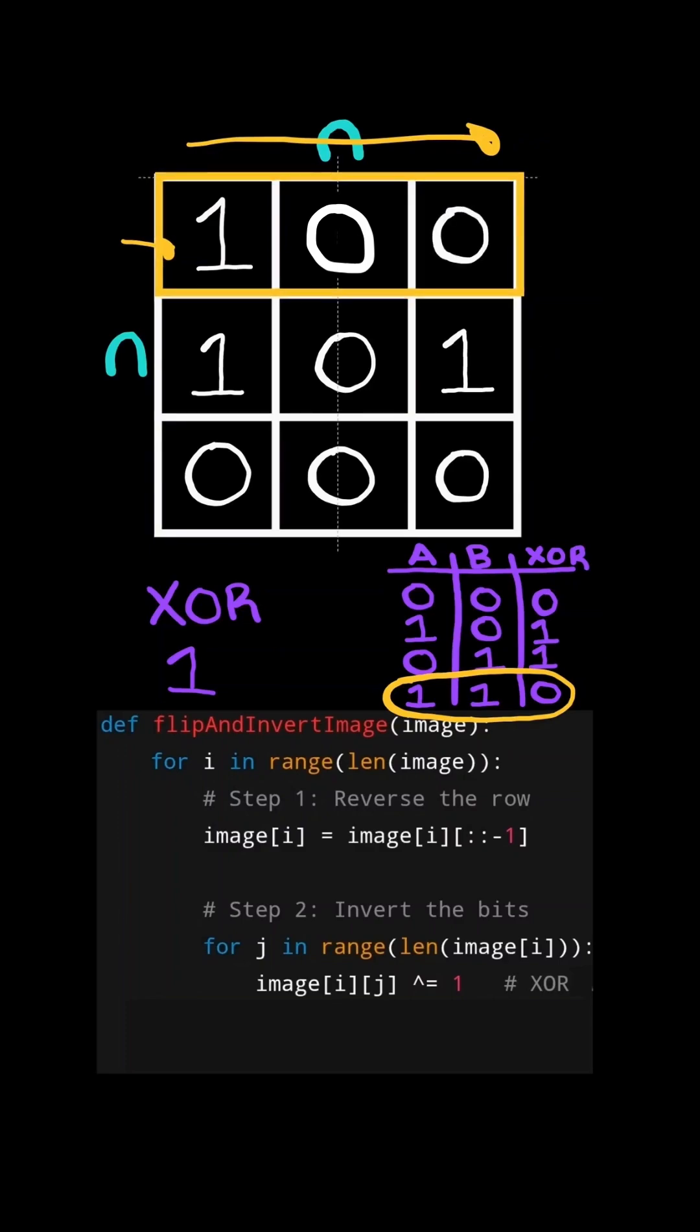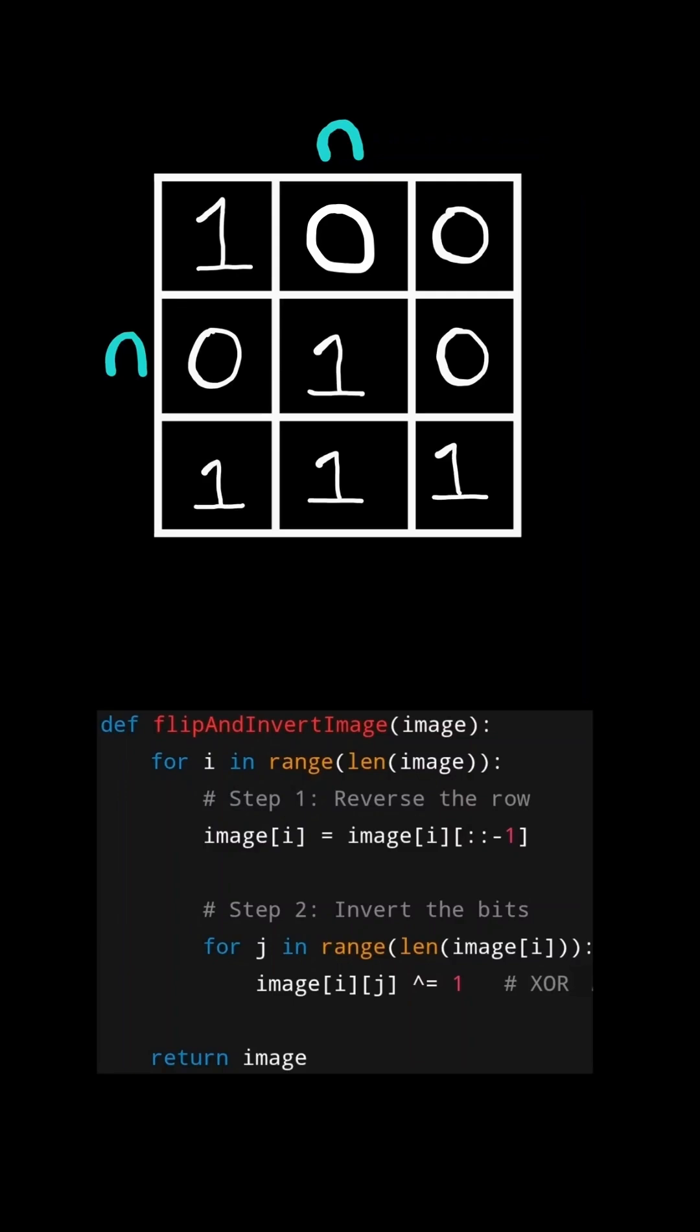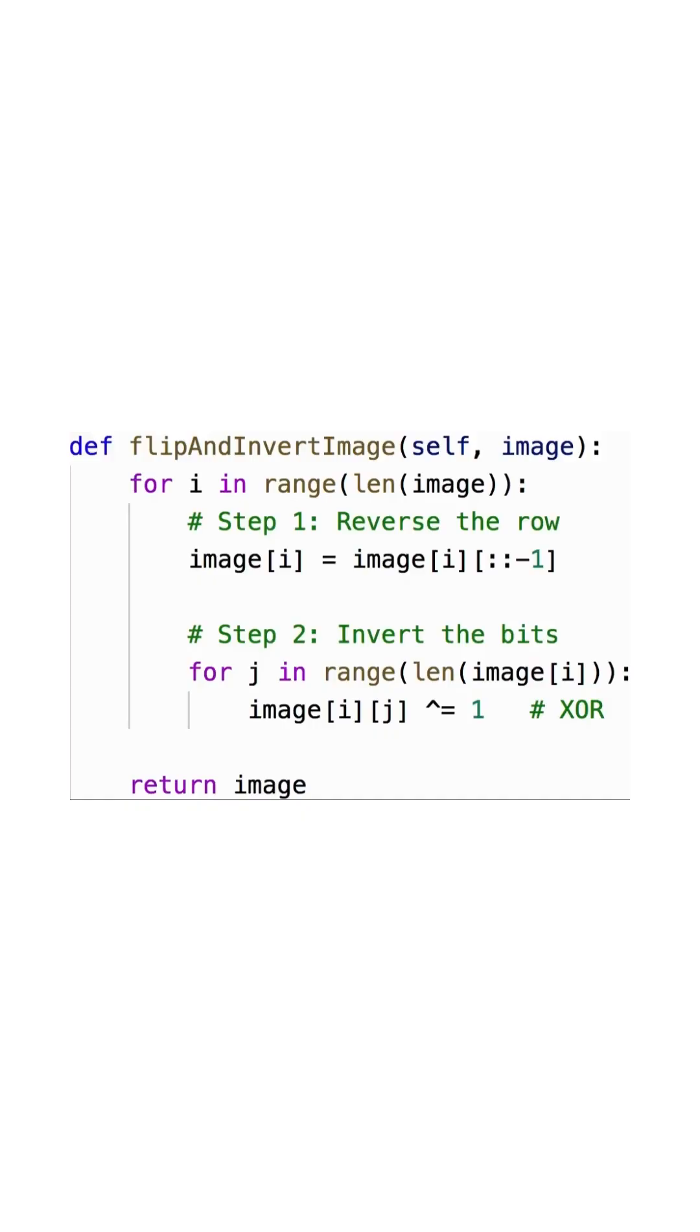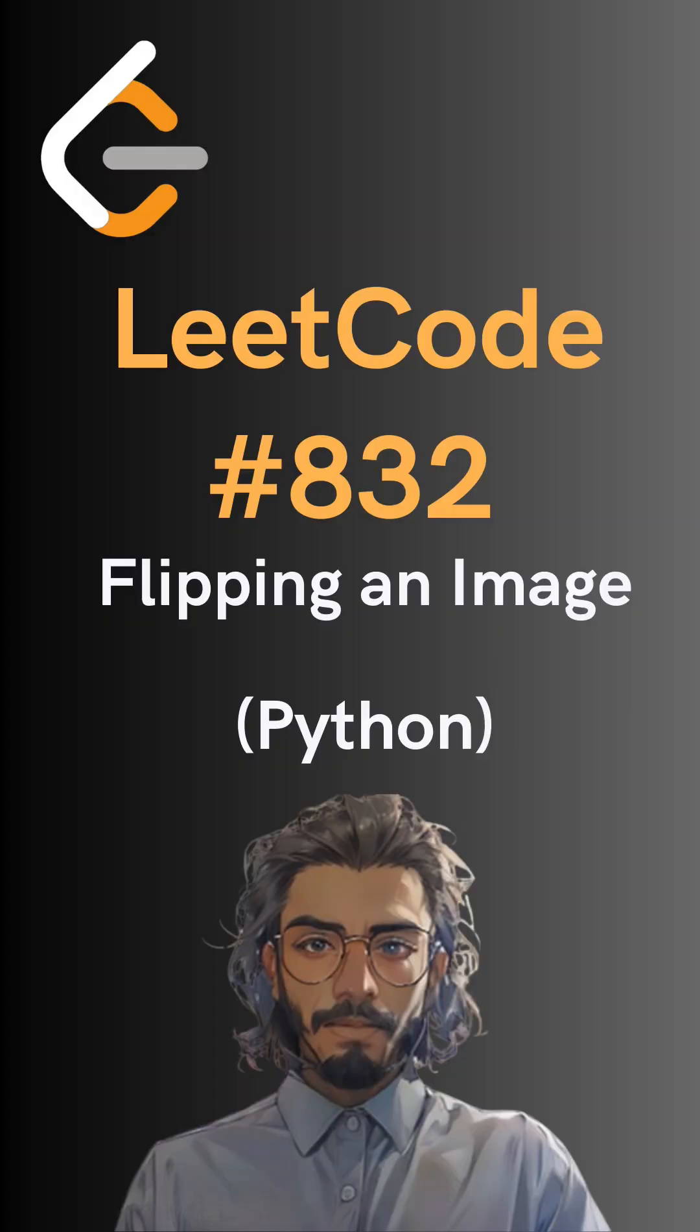At the end, the row will be reversed and inverted, and so we continue the process to the next row. And finally, at the end, we will return the updated matrix. And here's the code to do so. Please like and follow for more.